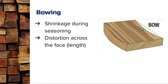Bowing is the same concept — that cup shape — but the difference is that we're looking at this along the length of the timber, not across the width or on the thickness. Again, this is usually seasoning-related, but it can also happen if you leave a board outside and it's not sitting perfectly flat, not stacked properly, or if there's weight on it causing it to be pushed down. Bowing can occur manually, but generally speaking it happens from seasoning.